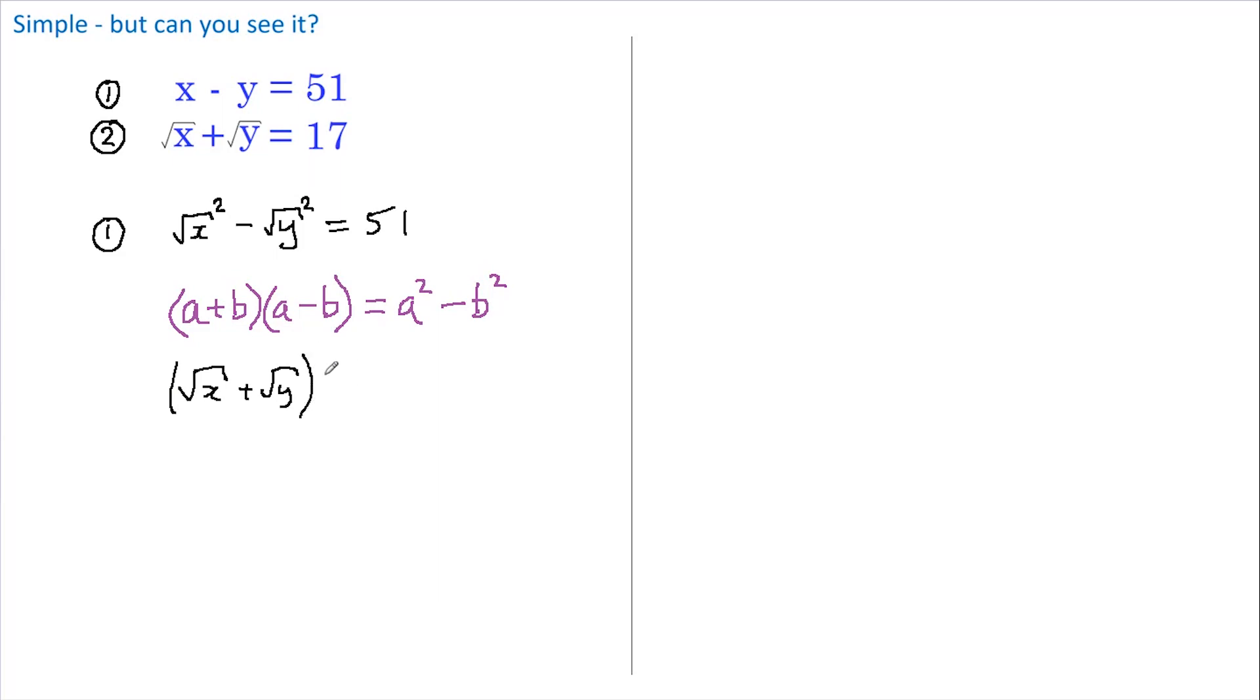Multiplied by root x minus root y in brackets, still equals 51. Now if you look up here at rule number two, you'll see that we already know what root x plus root y is, it's 17, so we can